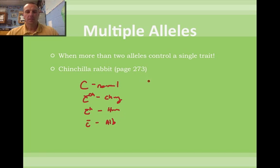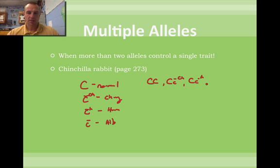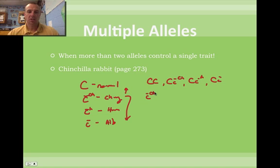What this means is: the normal bunny rabbit, you can get in three ways — anytime you have a big C along with a little c, you have a normal-looking bunny rabbit. Chinchilla is dominant to Himalayan and albino, but recessive to normal. So you can get chinchilla in a couple of ways using the c-CH allele combinations.